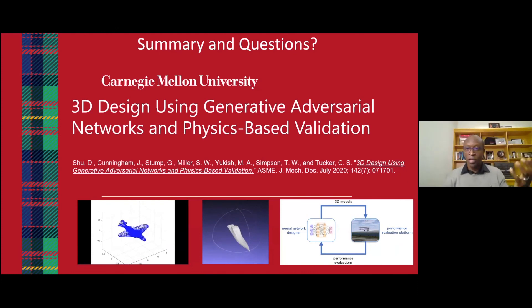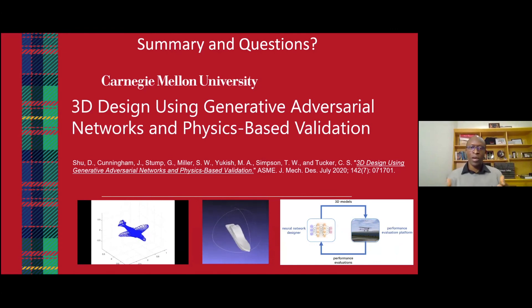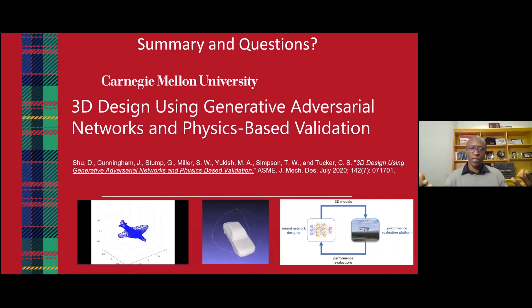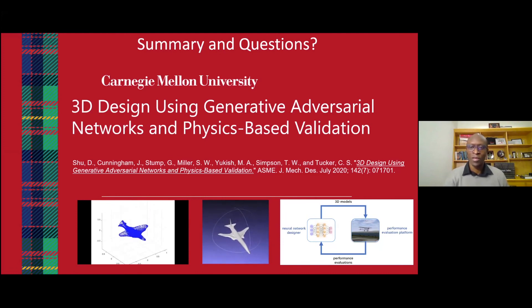In summary, we trained a neural network to take a collection of points in 3D space and organize them in such a way that they visually pass the inspection of a discriminator network, which can be thought of as the designer critique. Then a surface mesh is applied to them, and the physics functionality is determined based on a physics-informed simulator environment that forms a nice loop of design generation, evaluation, and filtering. Thank you for your time. More details about this work are in the paper and I'm open for any questions.